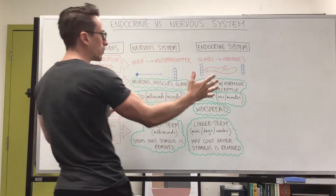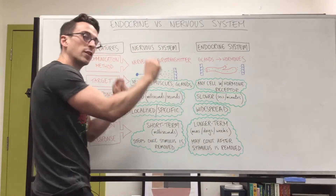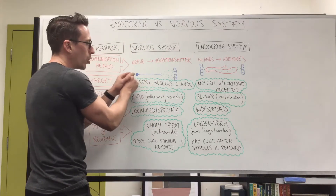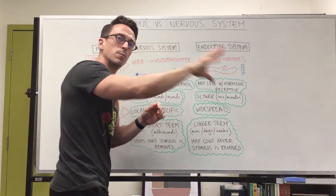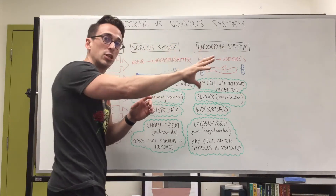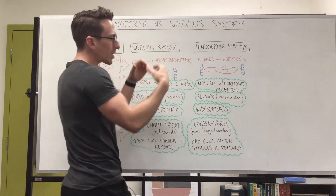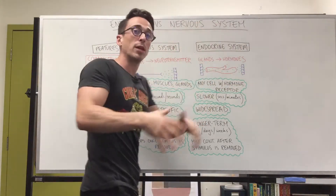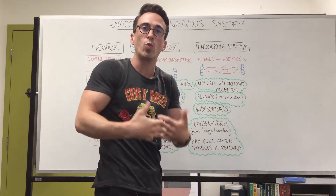If we look at the range of effect, the nervous system is very specific and localized because that neuron or nerve is basically a direct highway to something specific — a specific muscle, gland, or tissue. With the endocrine system, because it releases hormones into the bloodstream which goes everywhere in the body, its effect is widely dispersed and widespread.